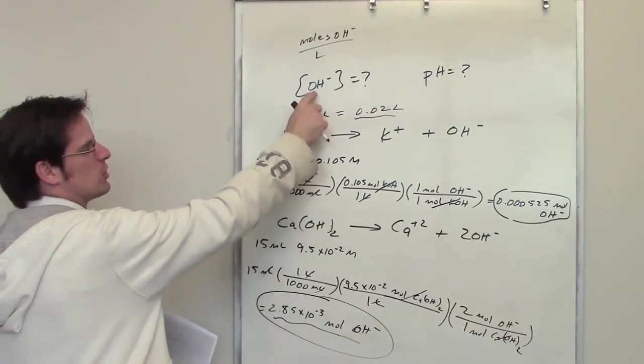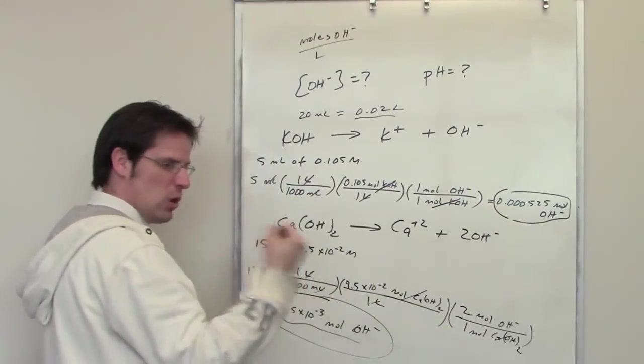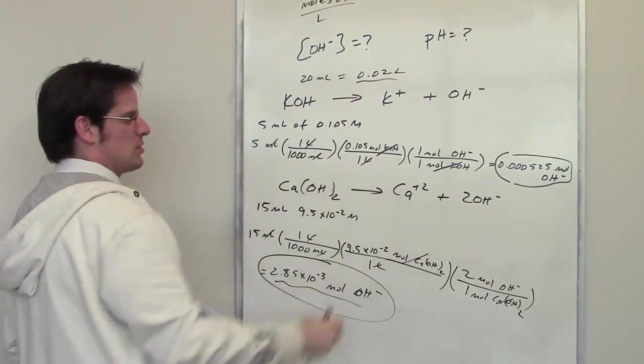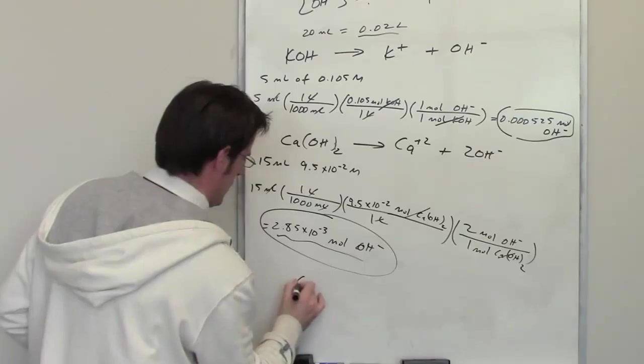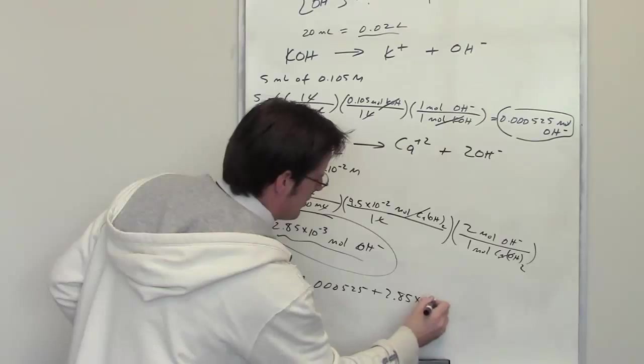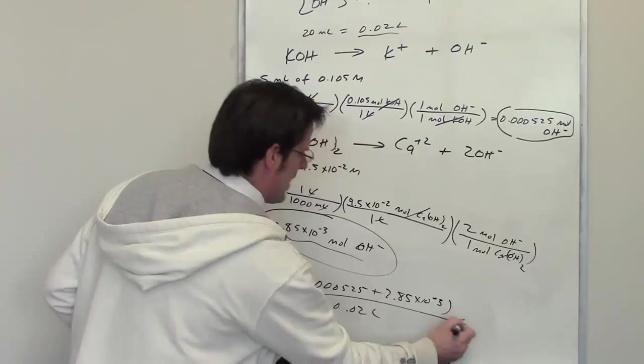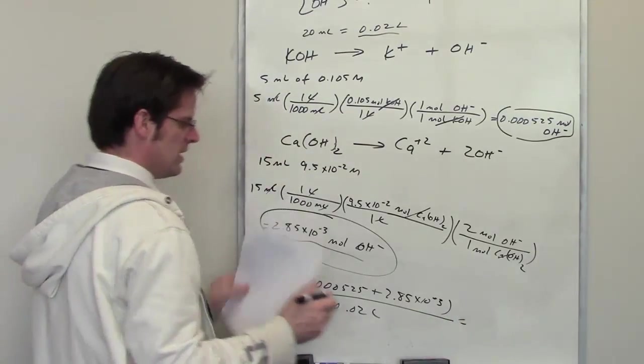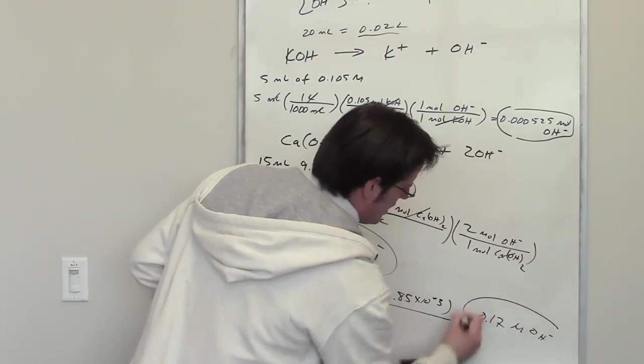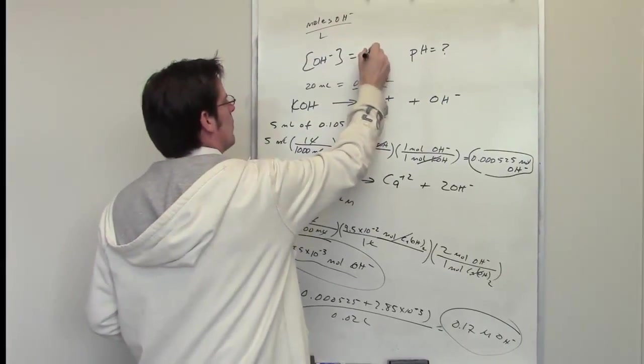So what I need to do to determine the concentration of hydroxide is take this many moles of hydroxide plus this many moles of hydroxide and then divide it by the volume, which is the number of liters right here. So I'll go ahead and do that. I've got 0.000525 plus 2.85 times 10 to the negative 3rd. This is the number of moles of hydroxide. I divide that by 0.02 liters and that gives me the total concentration of hydroxide as being 0.17 molar hydroxide. That is the final concentration of hydroxide. I'll go ahead and throw that up here then, 0.17 molar.